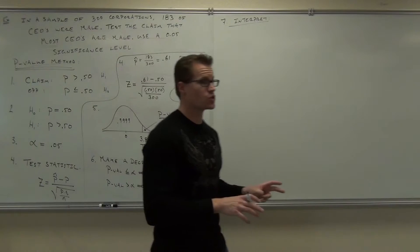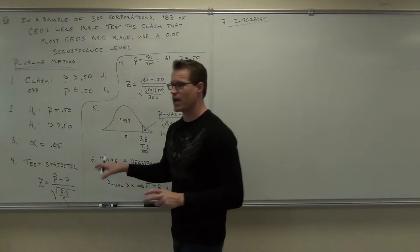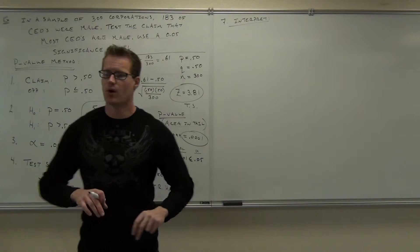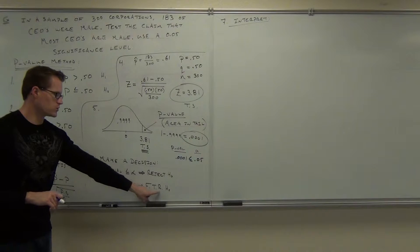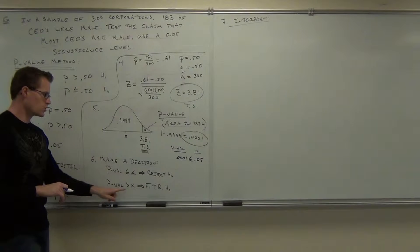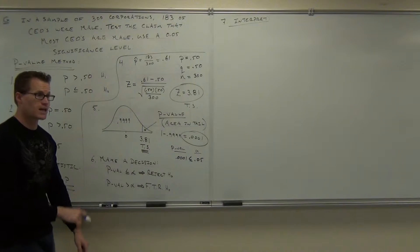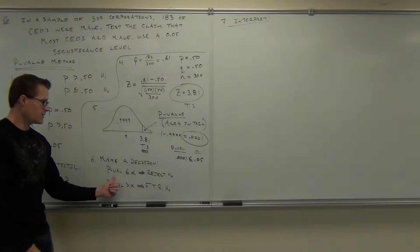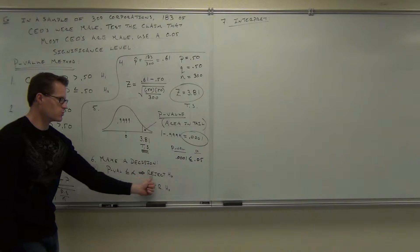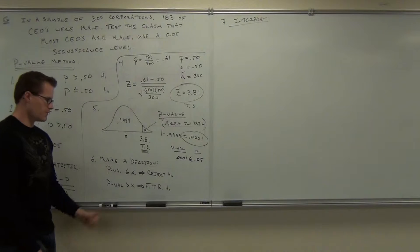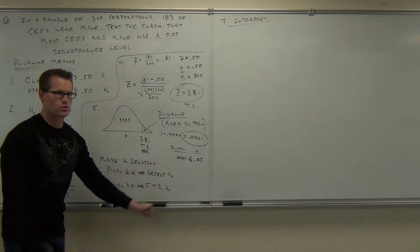That's where you make your decision. So check it out — are you going to reject H sub 0, or are you going to fail to reject H sub 0? If the P-value is less than or equal to alpha, you reject. If it's greater than alpha, you fail to reject.